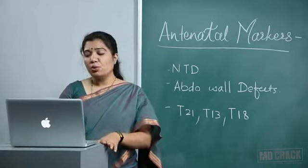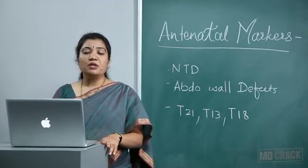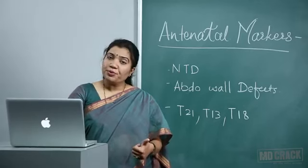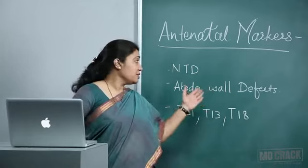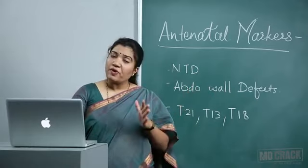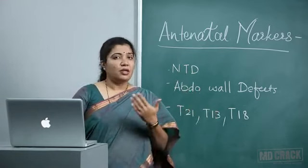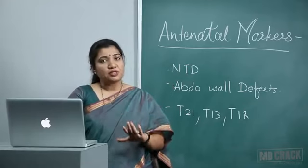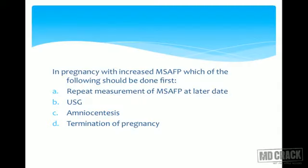A classic MCQ: 'MSAFP is increased in all except' — with options including open neural tube defect, meningomyelocele, spina bifida, and trisomy. The answer is trisomy, because in open neural tube defect, meningomyelocele, and spina bifida, MSAFP levels are high. Only in trisomy do the levels decrease. Another question: 'In pregnancy with increased MSAFP, which should be done first?' — the answer is ultrasound, not amniocentesis or termination.